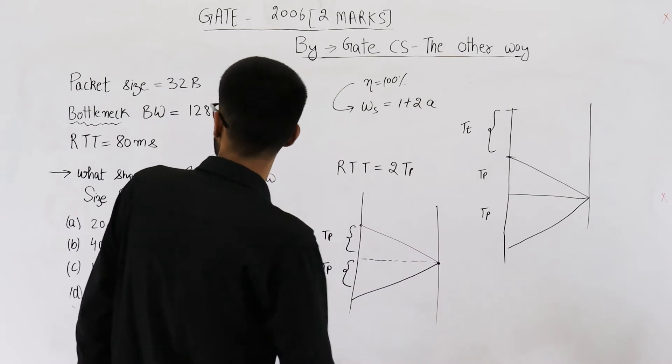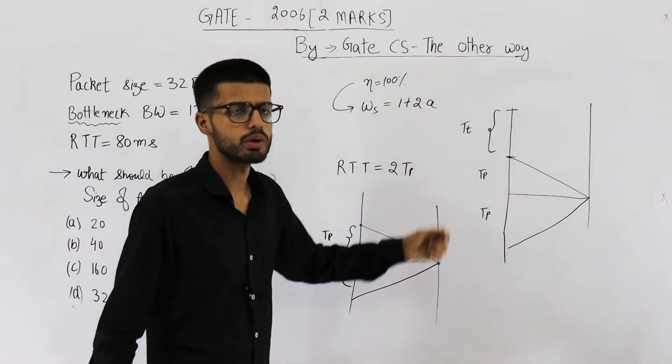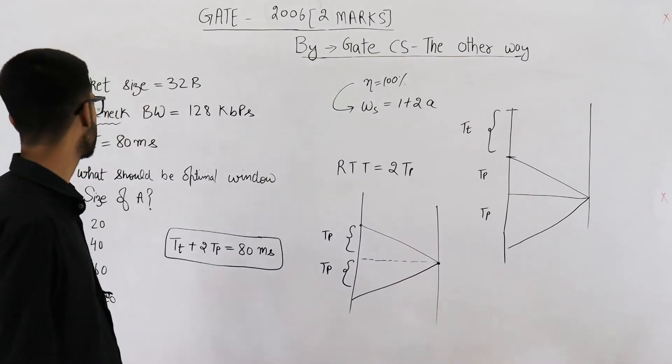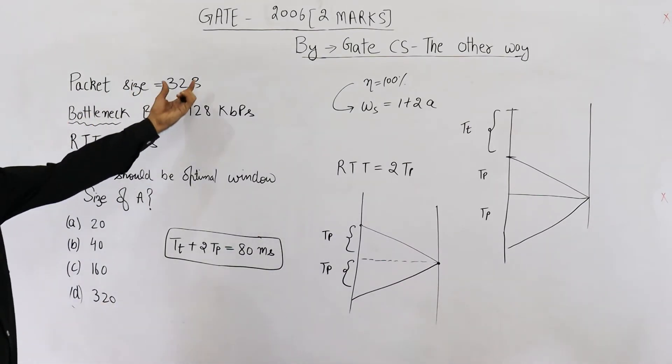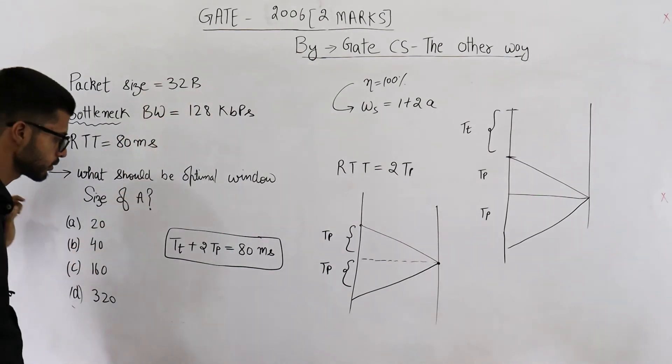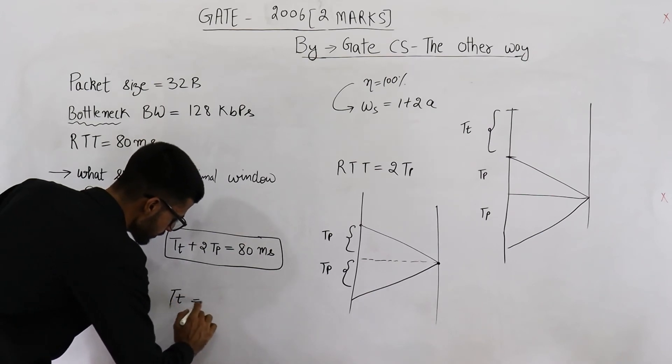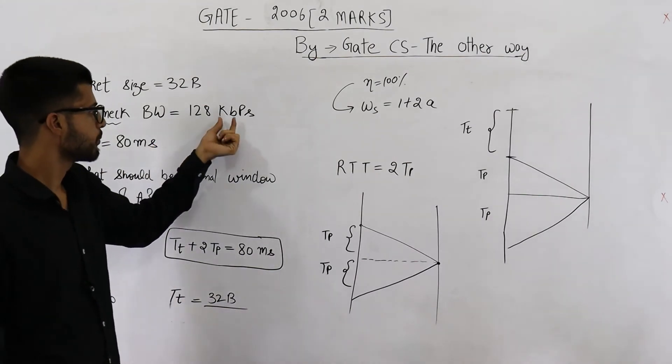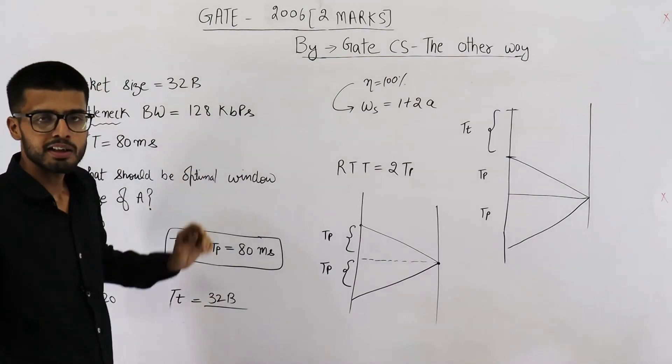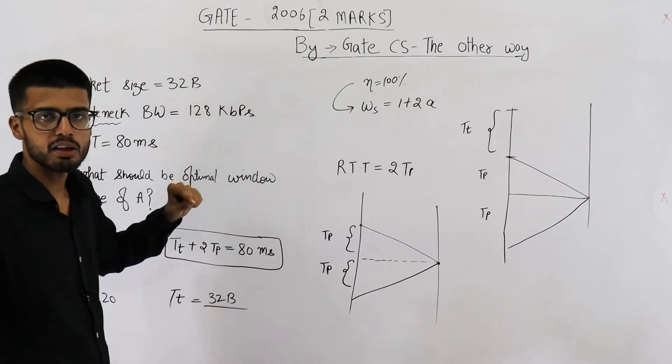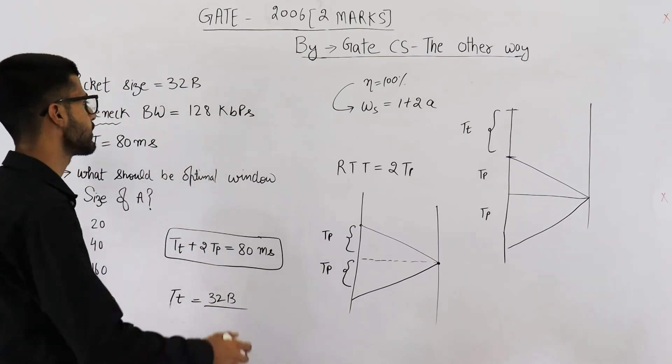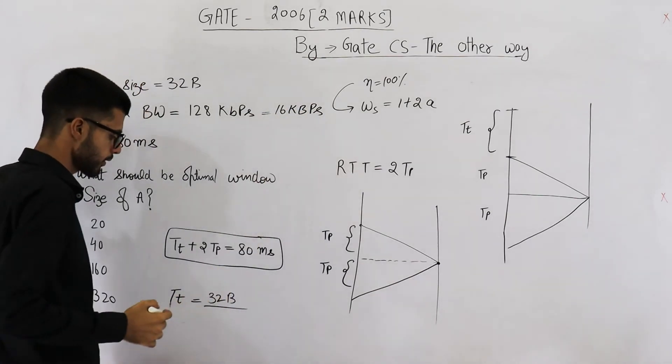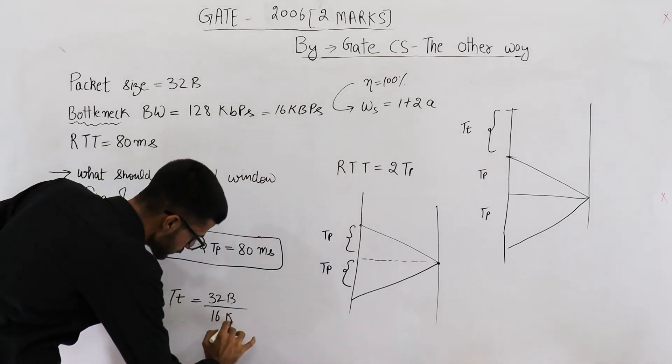Now let's just solve this question. So you can see we need to determine the value of 1 plus 2A. For finding out A we need to divide the propagation delay by transmission delay. Let's find out what is transmission delay. Transmission delay is the size of the packet divided by the bandwidth. So TT will be size of packet is 32 bytes divided by bandwidth. Unit of bandwidth is kbps but we want it in kilobytes per second. So if we just divide this by 8, you are going to get 16 kbps. So divide it by the bandwidth which is 16 kbps.